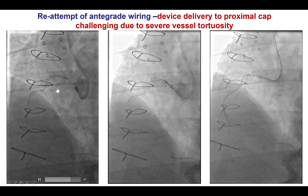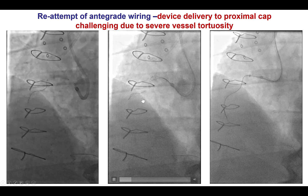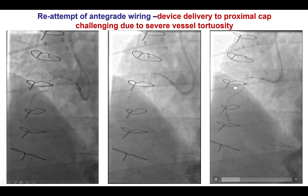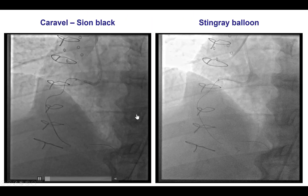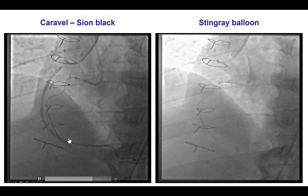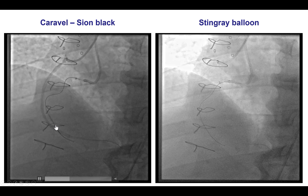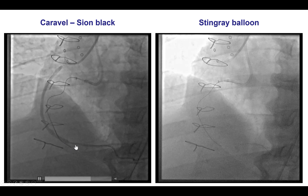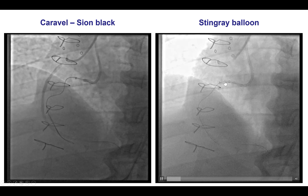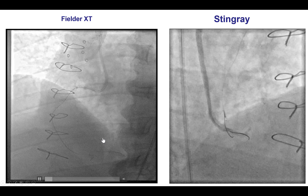So we returned to antegrade crossing attempts. We realized that antegrade wiring would not work and changed to antegrade dissection re-entry using knuckled guide wires. After using a Sion Black polymer-jacketed wire, the wire seemed to advance close to the distal cap — it was actually moving along the side of a branch of the distal right coronary artery. After this, we decided to attempt re-entry by delivering the Stingray balloon.